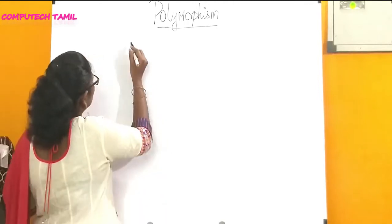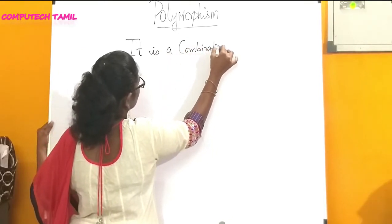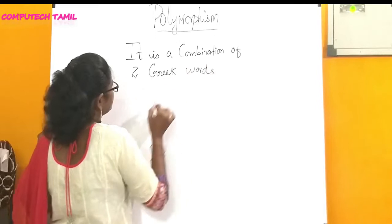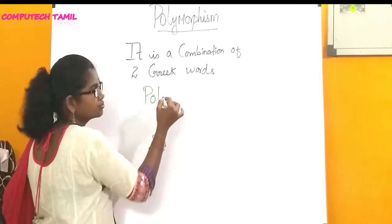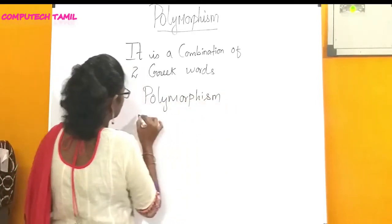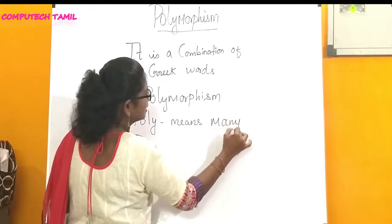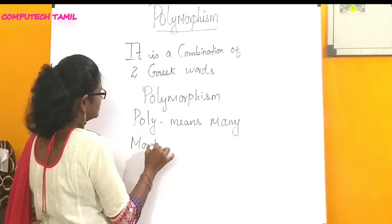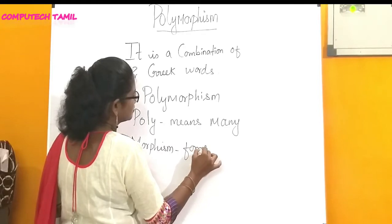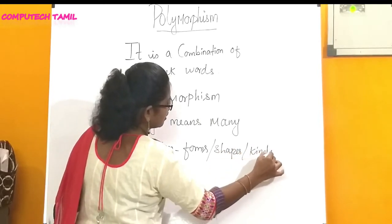Polymorphism is a combination of two Greek words. Poly means many. Morphism means forms or shapes or kinds.